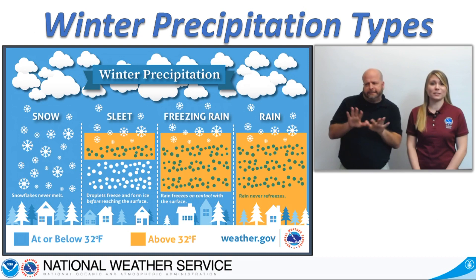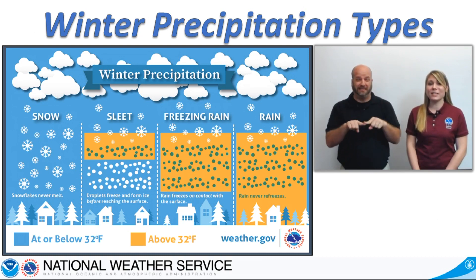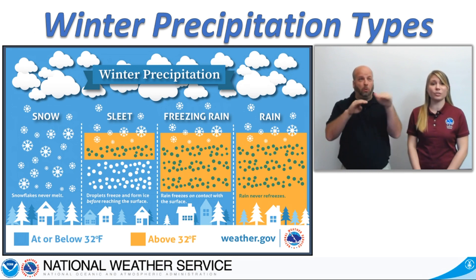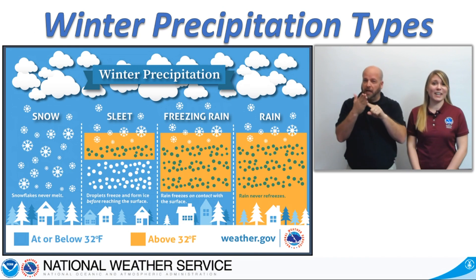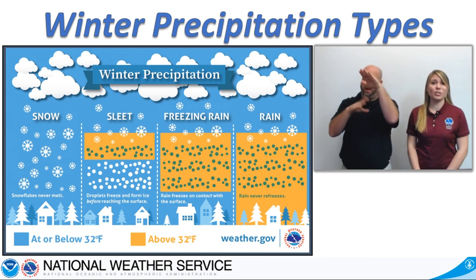In general, the type of wintry precipitation depends on the depth of freezing air and any presence of air above 32 degrees aloft. Check out the graphic. If there is freezing air present aloft and at the ground, we should expect snow to fall.